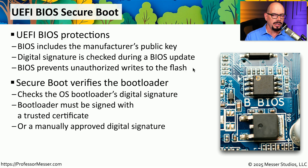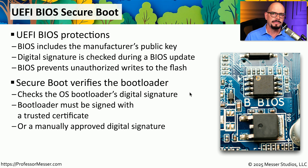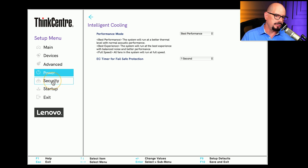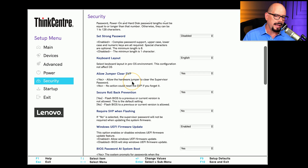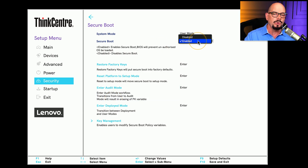Secure Boot also checks the boot loader that runs before your operating system starts. It does this by looking at the digital signature associated with the boot loader and comparing that to a trusted certificate on your system. If Secure Boot cannot confirm that your digital signature is valid, it will not start the operating system. On our computer, the Secure Boot options are under Security. Inside of this configuration are options to enable or disable Secure Boot and to manage the keys used to confirm those digital signatures.